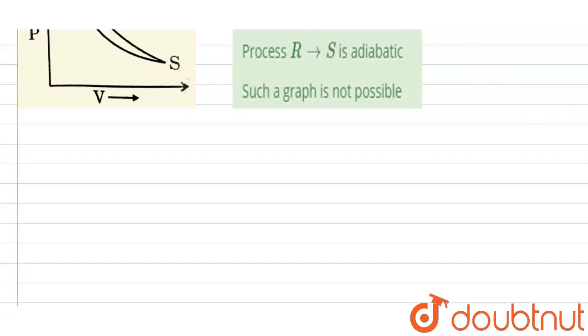First of all, see the graph is between P and V. So here this is your PV graph. And for isothermal curve, the isothermal process, the curve is like this, hyperbolic. This is your isothermal curve.